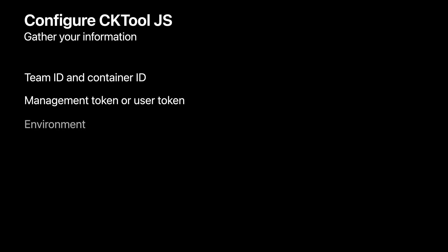The production environment contains the live data for your app. Now that I've reviewed how CloudKit stores data, I'll cover how to configure cktool.js. Because cktool.js talks with iCloud, you'll need to gather a few pieces of information so that it knows how to work with the right container and that your script is authorized to do so. You'll need your team ID and the container ID for the container you want to work with. You'll need a management token in order to work with schemas, and if your script will access data, you'll need a user token as well. All of these values can be obtained from CloudKit console. You'll also need to specify which environment — development or production — your script will run in.